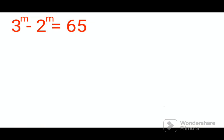Welcome everyone. Today we are going to solve a tricky indices problem where we have 3 raised to m minus 2 raised to m equals 65. The thing is you have to remember that m is an integer. This is very important to remember.